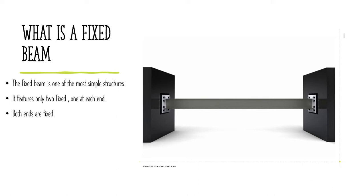The two ends of the fixed beam are fixed, one at each end, so the ends are unable to move. As compared to the simply supported beam where we have a roller support, here we have fixed supports at both ends.